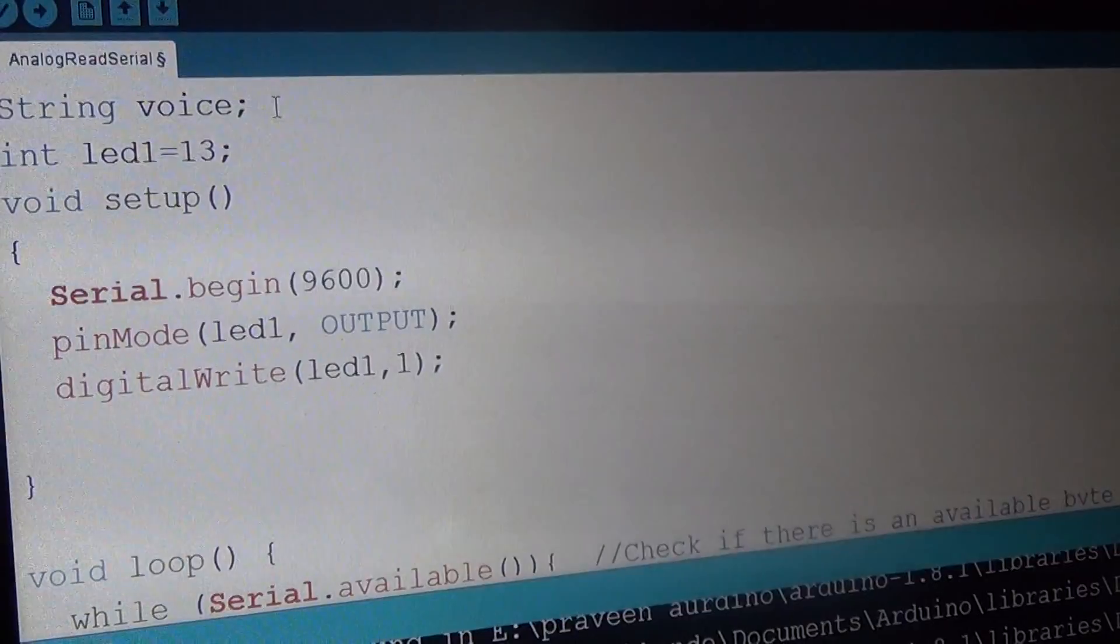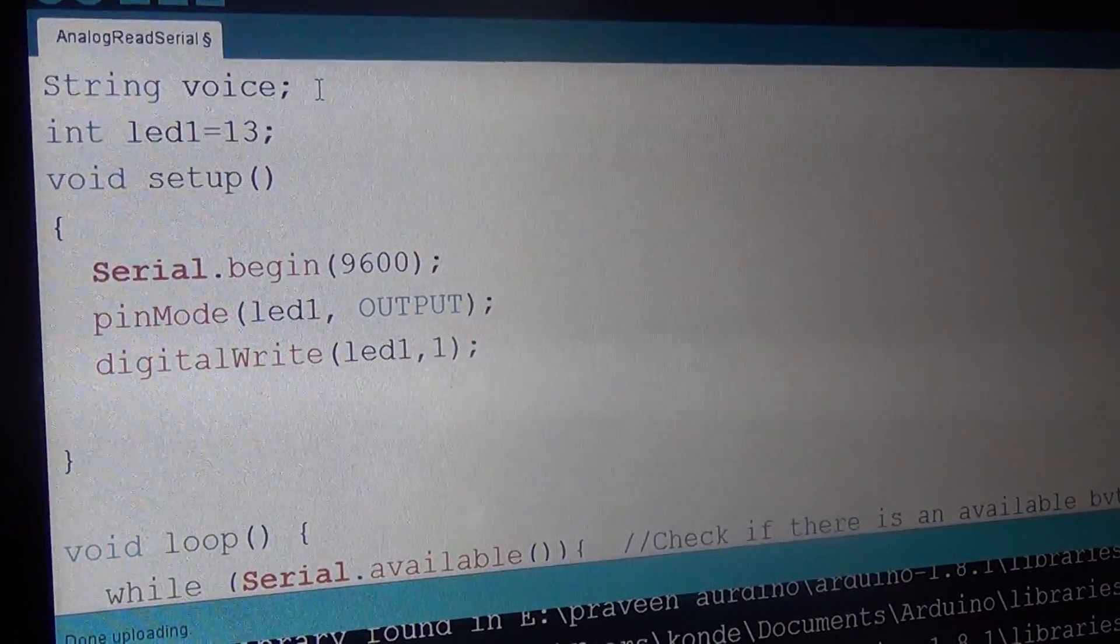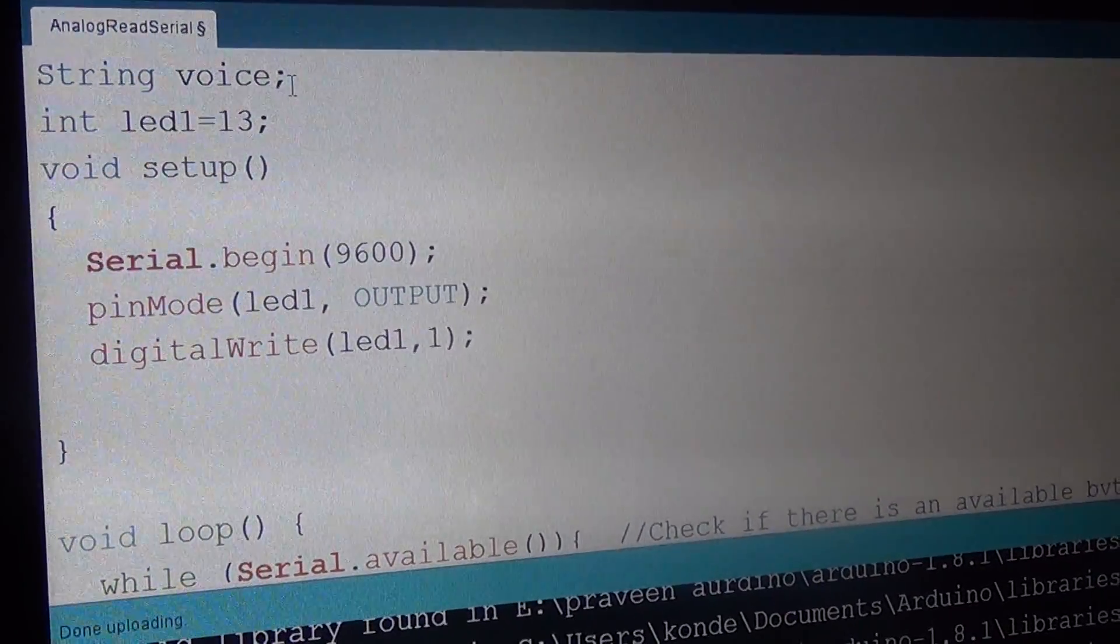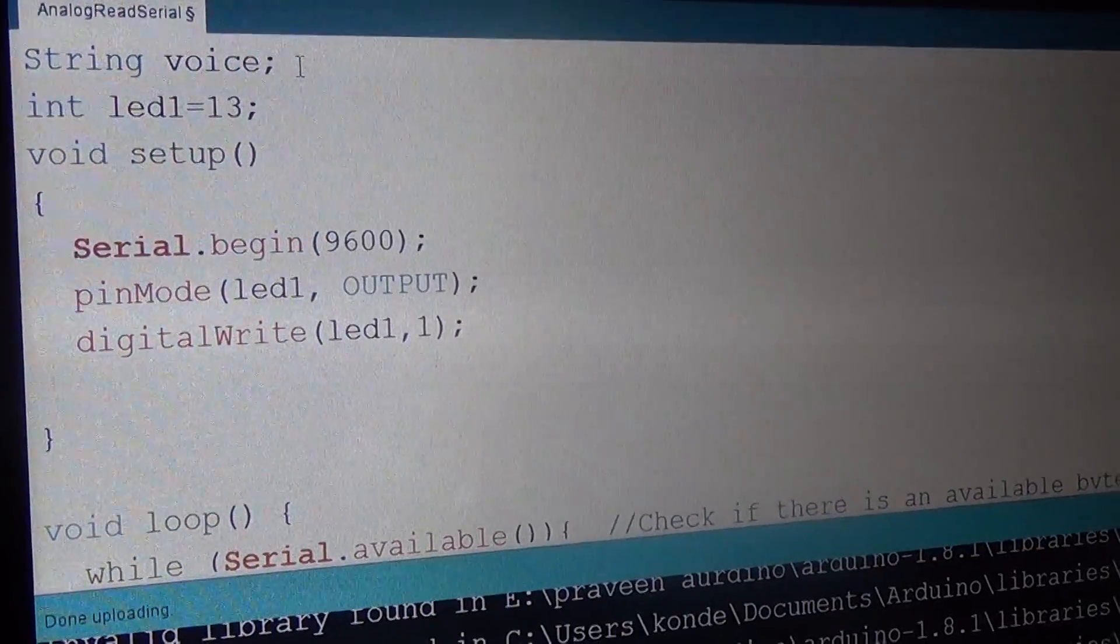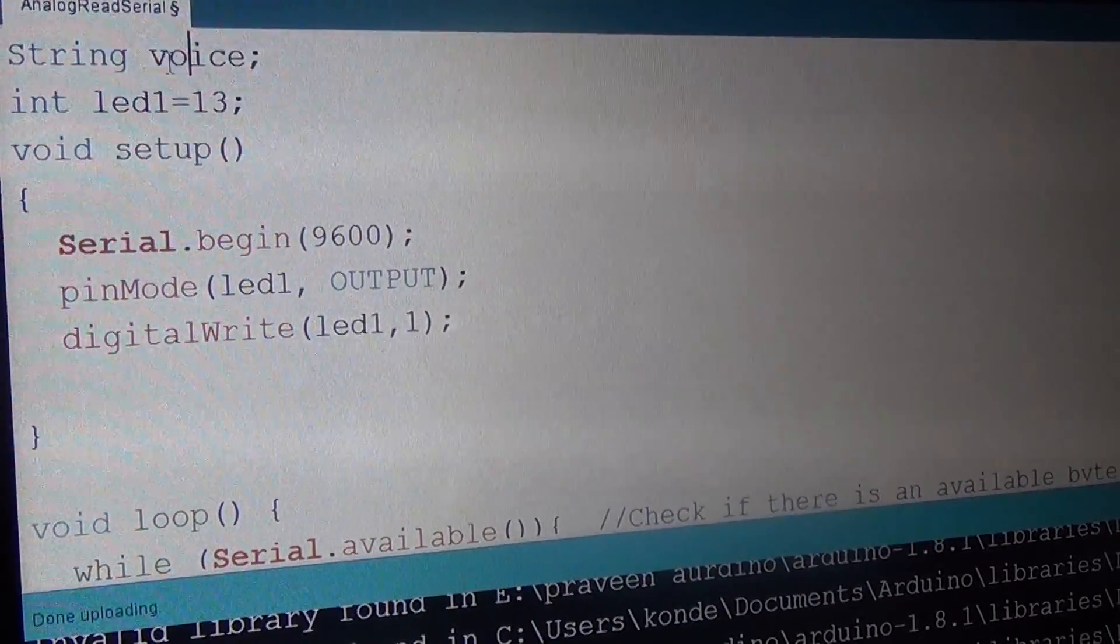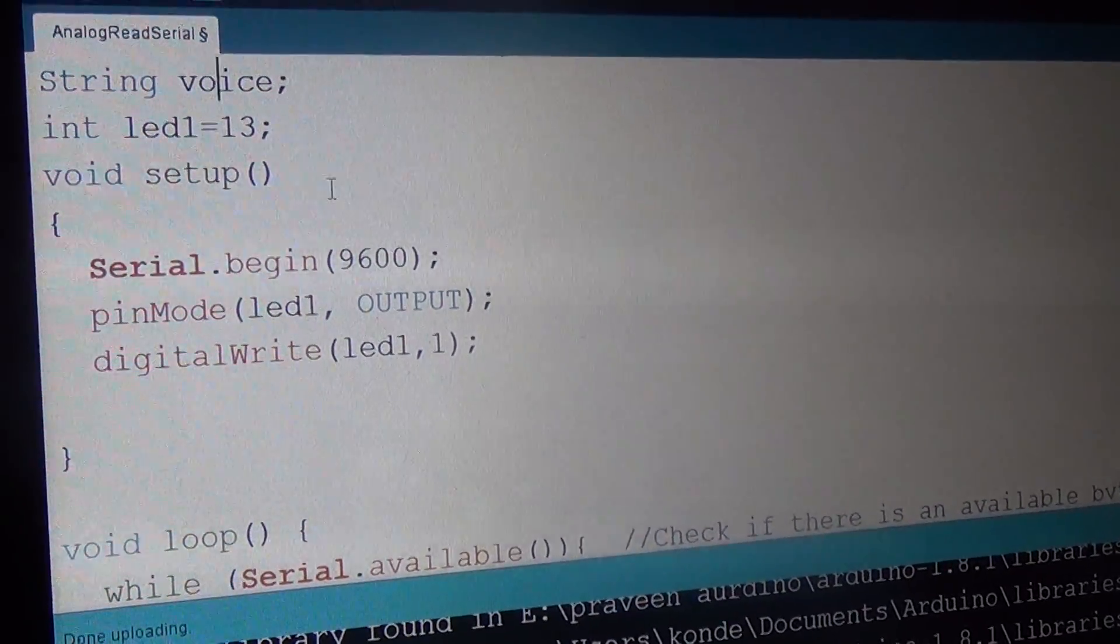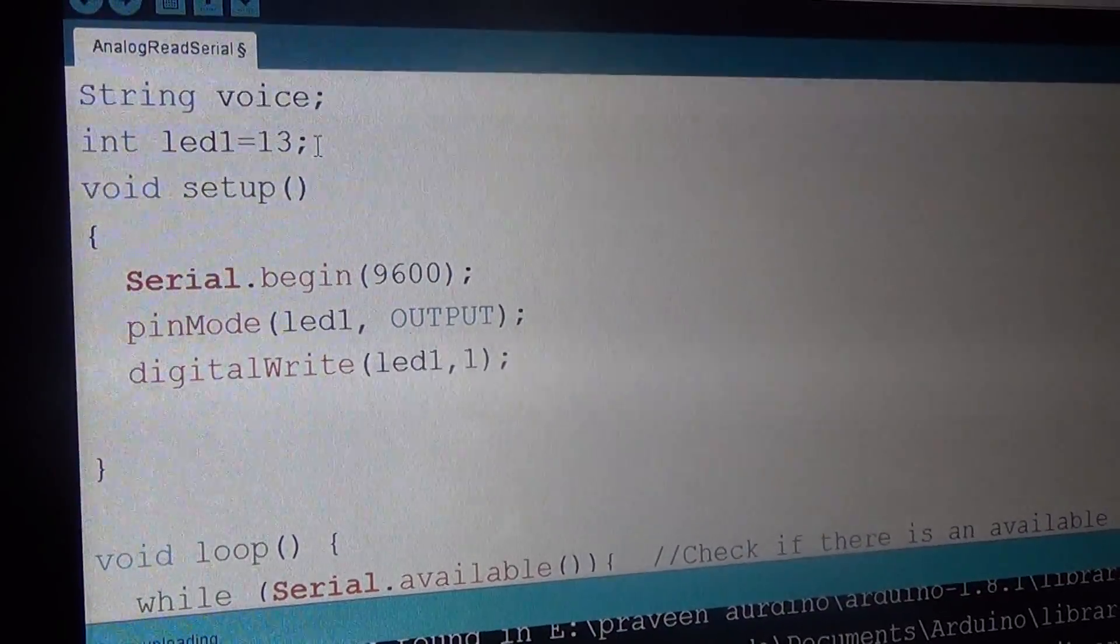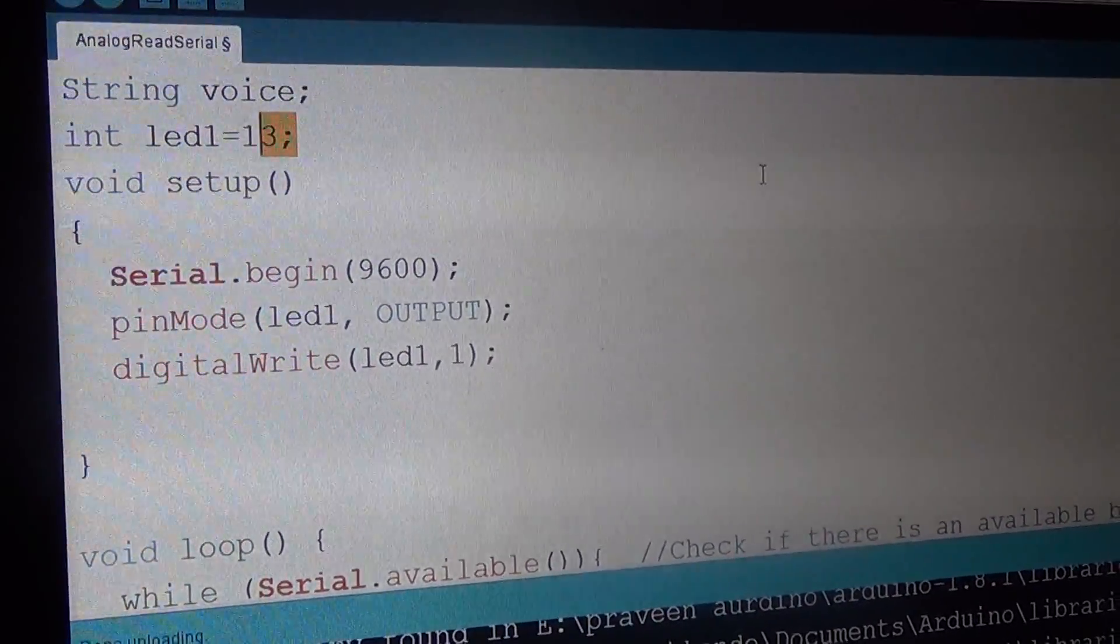Here we are going to send strings from the Bluetooth. For that purpose, I am going to declare a string variable with the name of voice and we are connecting our output device relay to the 13th digital pin of the Arduino.